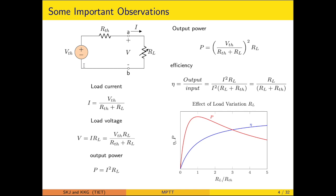The Thevenin equivalent is considered, consisting of a voltage source and a series resistance, with RL forming a simple series circuit. The current through the load resistance can be calculated as VTH divided by (RTH plus RL). This current multiplied by RL gives the load voltage. The output power is I squared times RL, and substituting the expression for current gives the power expression in terms of VTH, RTH, and RL.